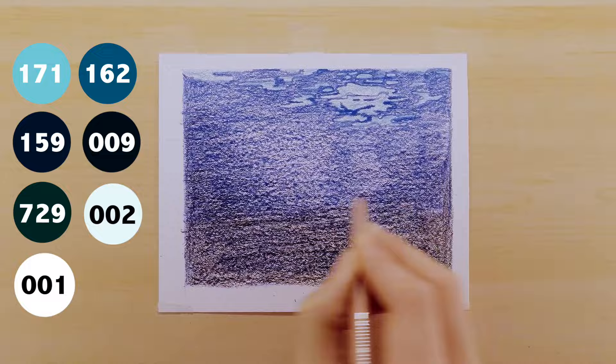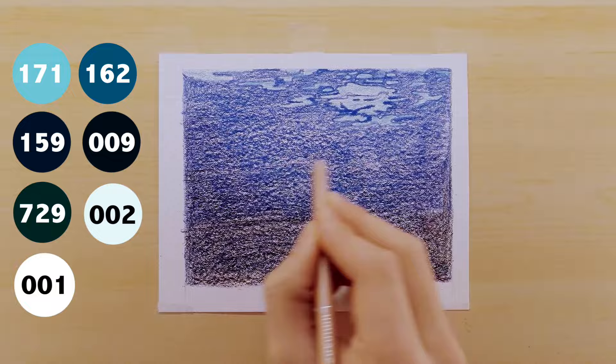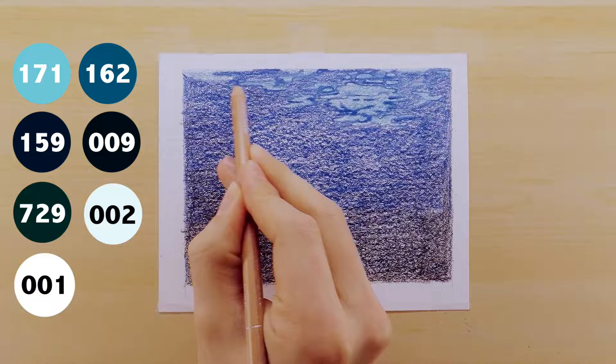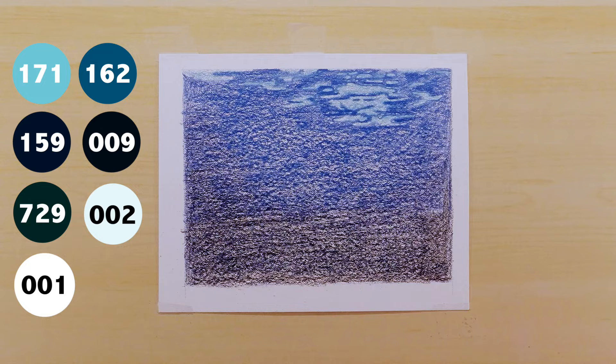Since we're going to be blending this out with odorless paint thinner, you're not really going to have to add too much pressure to the paper. You're going to just want to layer softly and you'll have this kind of grainy look up until the point you blend it out.